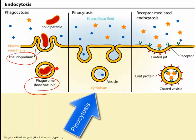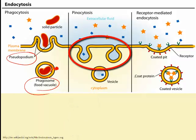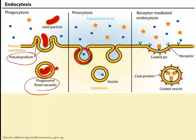Pinocytosis, nicknamed cell drinking, is endocytosis of fluid droplets. The cell membrane simply invaginates — there are no pseudopods. It is basically considered non-discriminating, because it takes in solutes dissolved in the droplet. So it might get the desired particle, but it might also get undesired particles along with it.